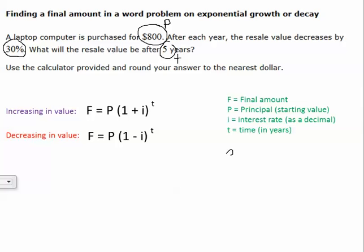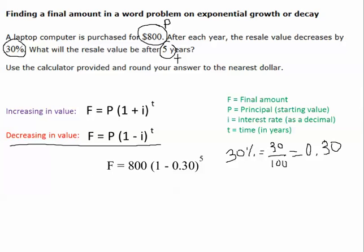So we're going to come over here. We're going to say 30%, which is 30 over 100 as a fraction, which gives us the decimal 0.30. Now we are going down in value, therefore we're going to use the formula for decreasing in value. So we're going to plug in all of our values, and that gives us that our final amount will equal 800 times (1 minus our interest rate as a decimal, which is 0.30), raised to the power of 5.